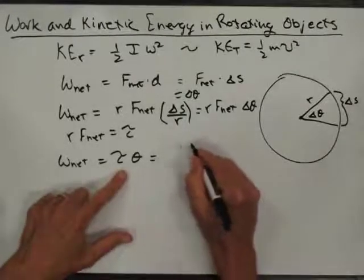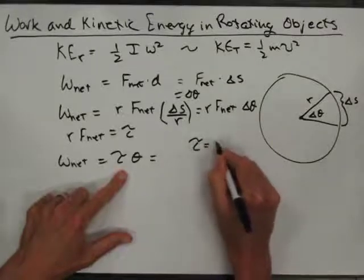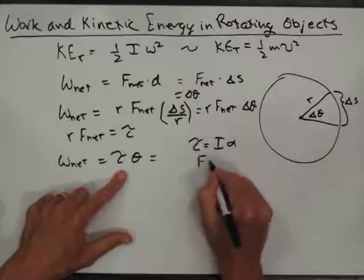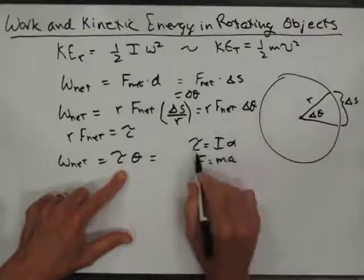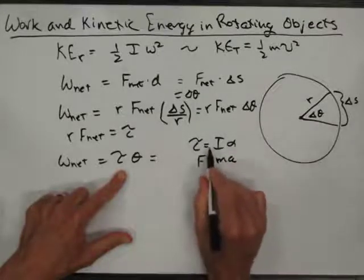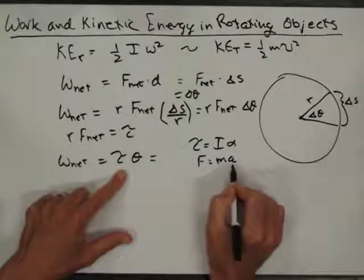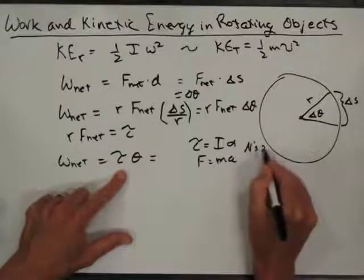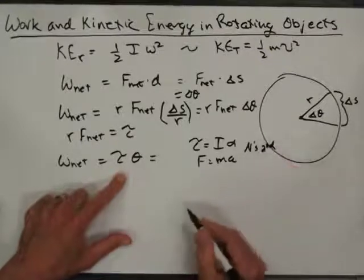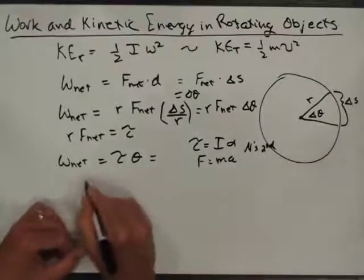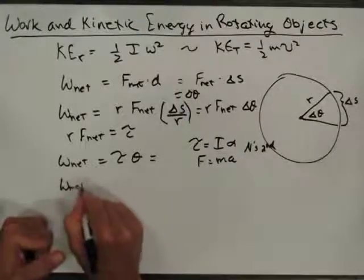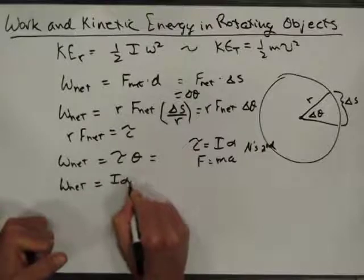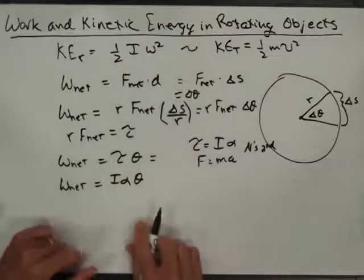The equation for torque is τ = Iα, which is the equivalent of F = ma — the rotational equivalent of force equals the rotational equivalent of mass times the rotational equivalent of acceleration. This is Newton's second law. So we can write W_net equals Iαθ instead of torque times theta.